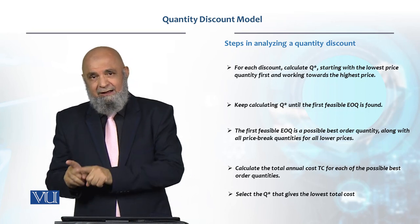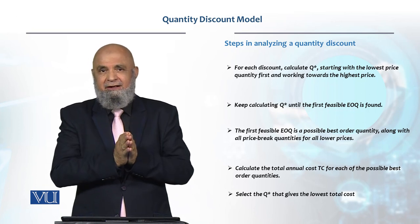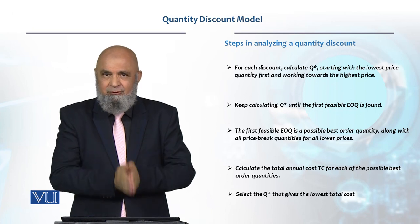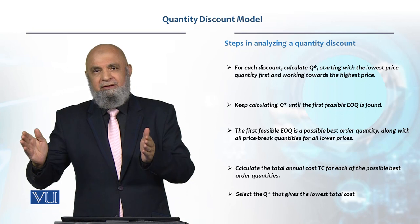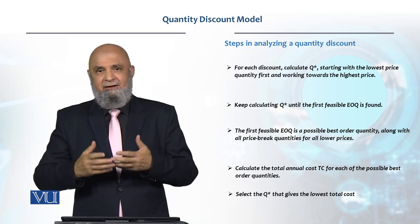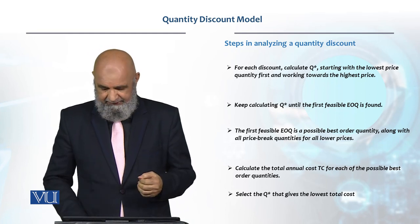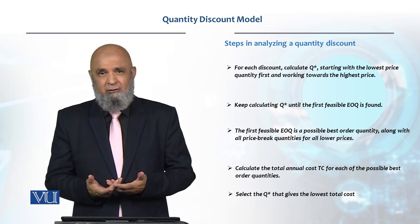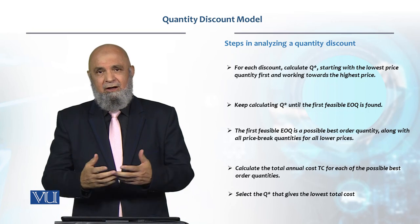What we call the price break quantity is the lowest quantity in the lowest range. If we have 2, 3, or 4 different quantities or different discount values, we decide accordingly and then calculate the total cost for each feasible quantity.